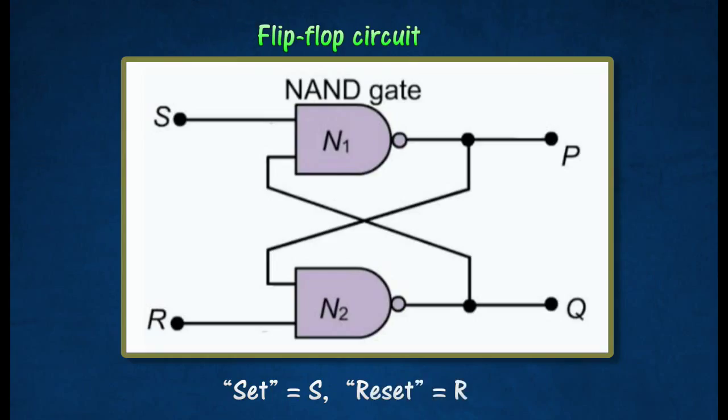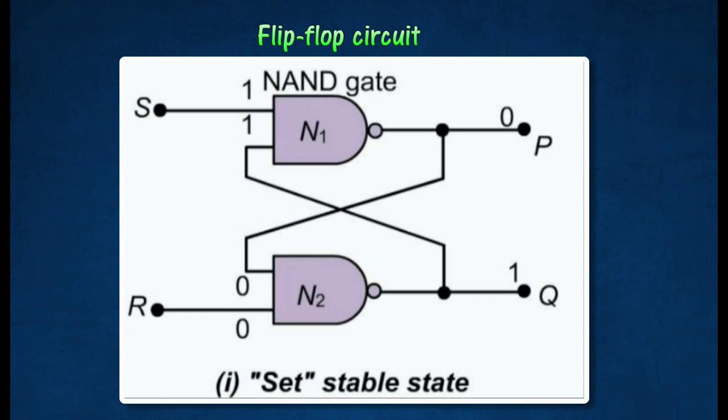The set and reset stable states are represented by the two inputs S and R respectively. There are two outputs, P and Q, at opposite logic to each other.